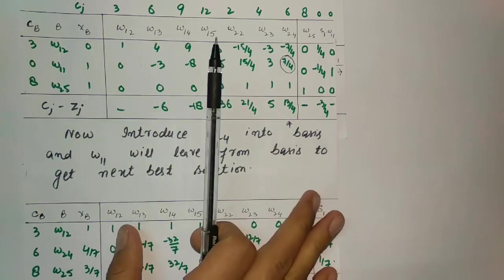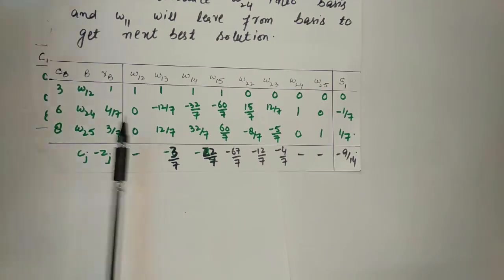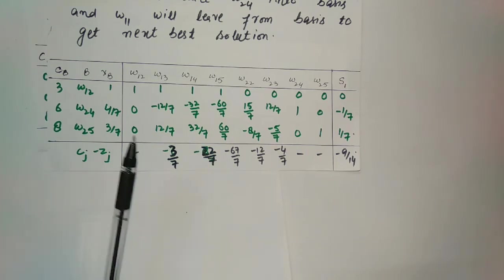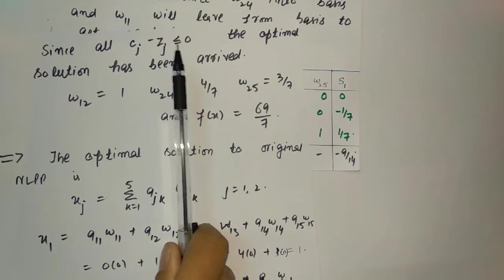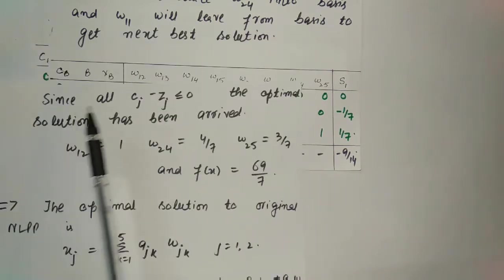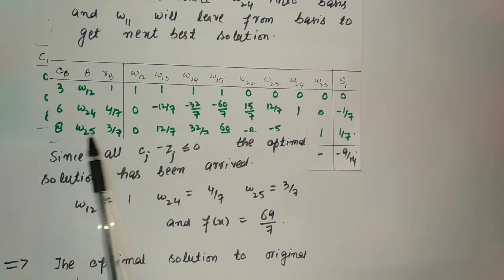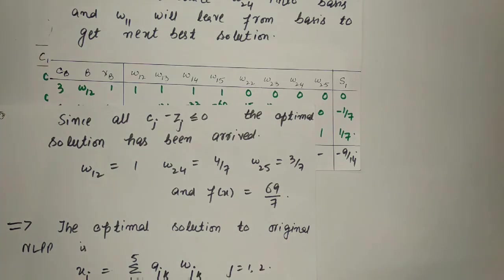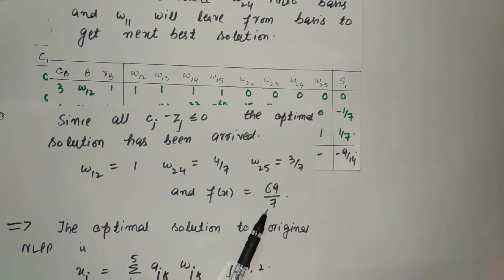This is the last table constructed. All c_j − z_j are less than zero — this is the optimal solution. Since all c_j − z_j ≤ 0, the optimal solution has been obtained: w₁₂ = 1, w₂₄ = 4/7, w₂₅ = 3/7, and the maximum f(x) = 69/7.